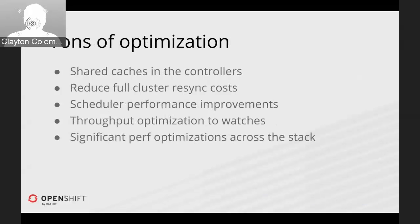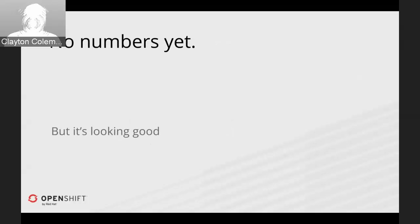Finally, on the performance front, there's a whole host of optimizations from people across many different companies and individuals that have already been made to the cluster — some real big wins across the board. We're very optimistic about Kubernetes 1.3. Those performance improvements will allow us to keep adding features and keep improving the ability of the cluster to run itself.